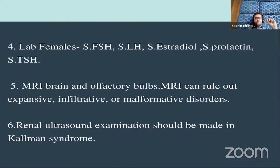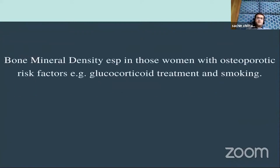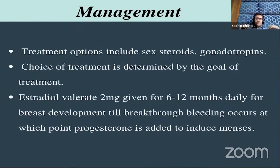Regarding lab values: I've seen clinicians only check estradiol or LH alone, but you need LH, FSH, and estradiol together — this helps differentiate subtle causes. MRI of the brain and olfactory bulb can rule out expansile, infiltrative, or malformative disorders. Renal ultrasound should be performed because of the association with renal agenesis in Kallmann syndrome.